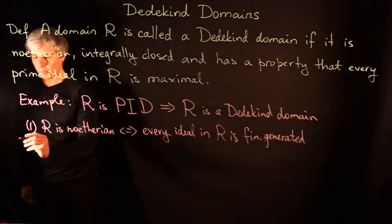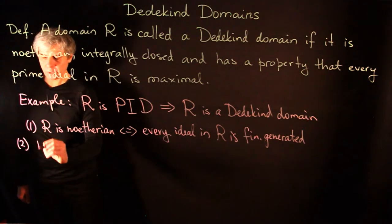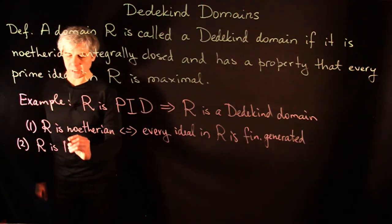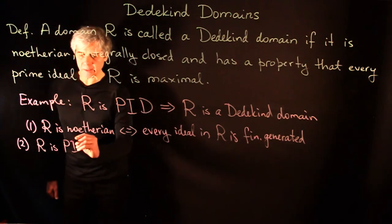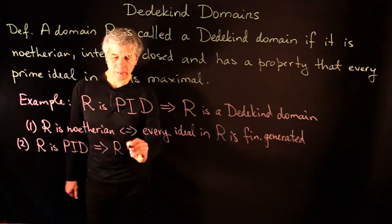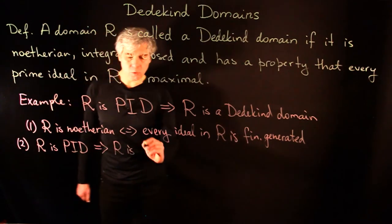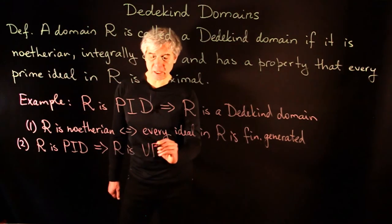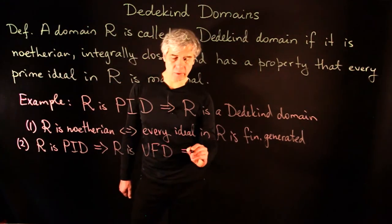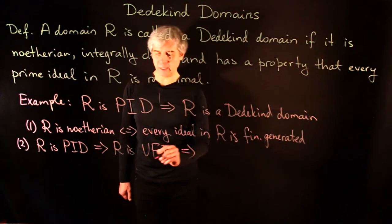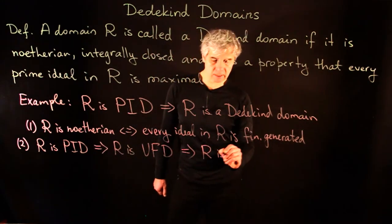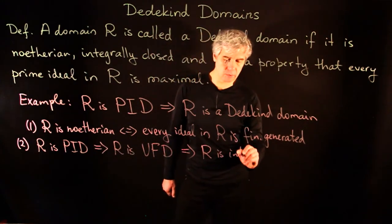For property two, we know that if R is a principal ideal domain, then R is a unique factorization domain. And we saw that every unique factorization domain is integrally closed.